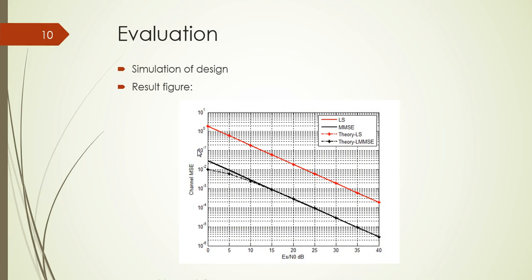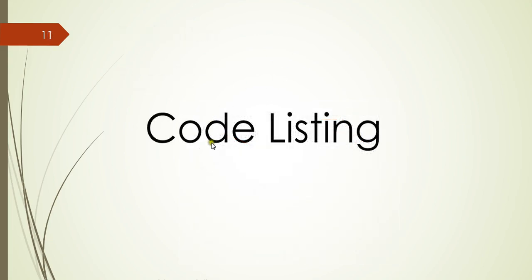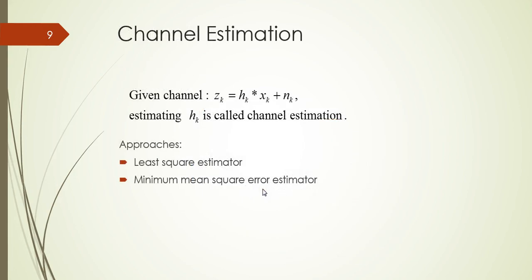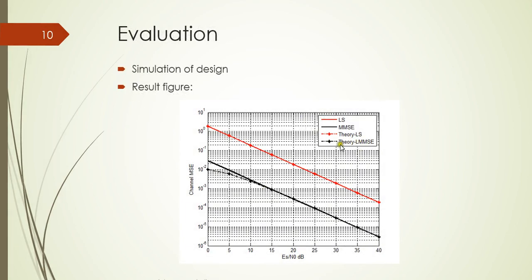So after we do the simulation, we can have the following result, which shows in this figure. The red line shows the least square approach, which is in here, and in here, the black line shows the minimum, which is in here, minimum mean square error estimator. So these two, MMSE and LS, give us a result that shows, as the, since the ES over the N0 is the energy, is the symbol energy to noise ratio, so the result shows the relationship between the MSE over symbol energy to noise ratio.